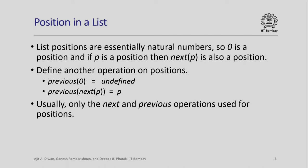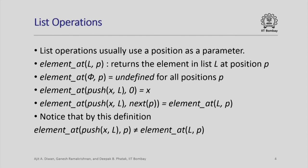List position is another type whose value you can think of as just a number. So 0 is a position, and if p is a position then there is a next position called next(p). Sometimes we also need a previous operation: previous(0) is undefined, whereas previous(next(p)) is equal to p. Given any position p we can define a previous position, except for the 0th position where it is undefined. Usually we need only these two operations — next and previous — and list operations will use positions as parameters.